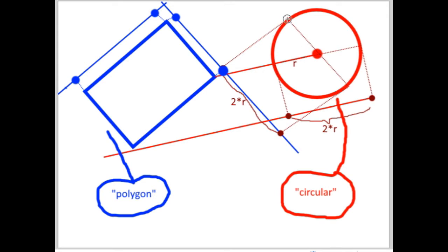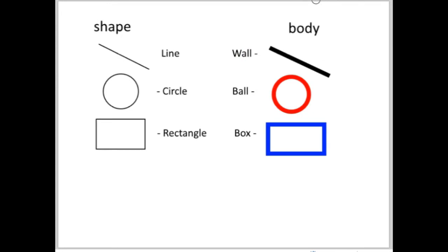There is an algorithm for applying the separating axis theorem on lines, rectangles, and circles, but not for capsules. If I want to use SAT collision detection on a capsule object, I need to decompose it into a rectangle and two circle components. And I'm going to introduce a concept that makes a difference between a body and a shape.